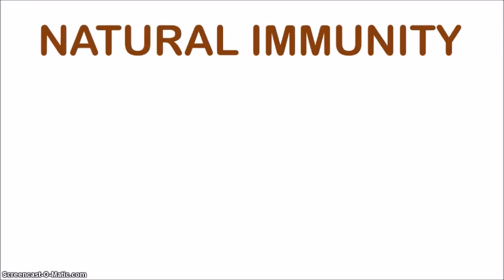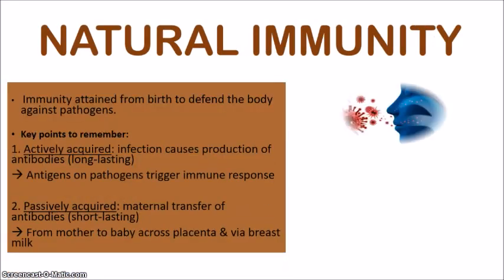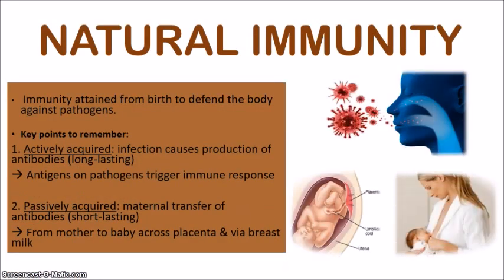Let's begin with natural immunity. Natural immunity is obtained from birth to defend the body against pathogens — this is the immunity that we're born with. What you need to know is that natural immunity can be acquired in two ways: it can either be actively acquired or passively acquired.